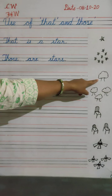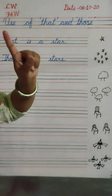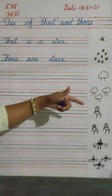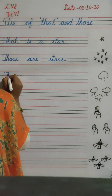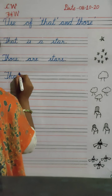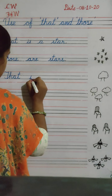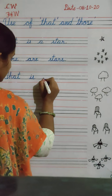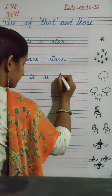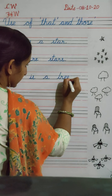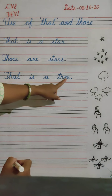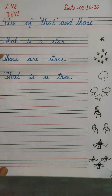Now, next picture. Look there. There is one tree. For one tree, what will you write? 'That' — for one thing. T-H-A-T. That is a tree. T-R-double E — tree. Put full stop. After completing the sentence, put full stop. And the first letter we will write capital.